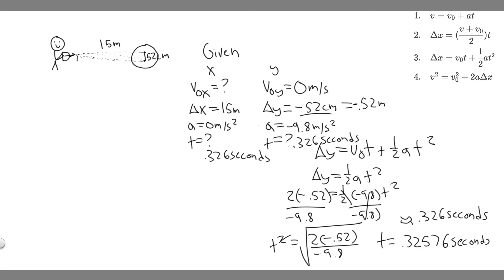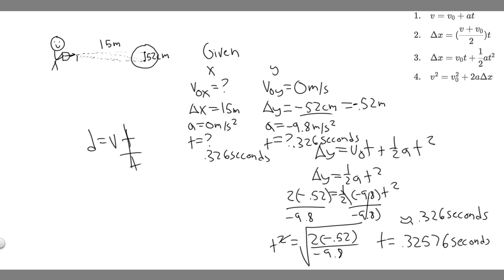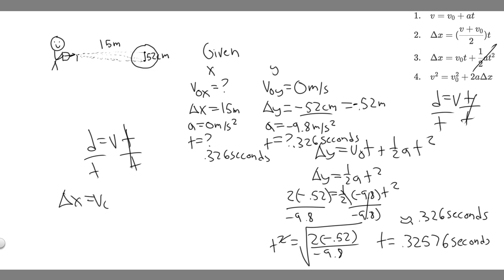Now that we have time, we use the equation Δx = v₀x·t (since ax = 0, the ½·a·t² term drops out). Solving for v₀x, we divide both sides by t: v₀x = Δx / t = 15 meters / 0.326 seconds.